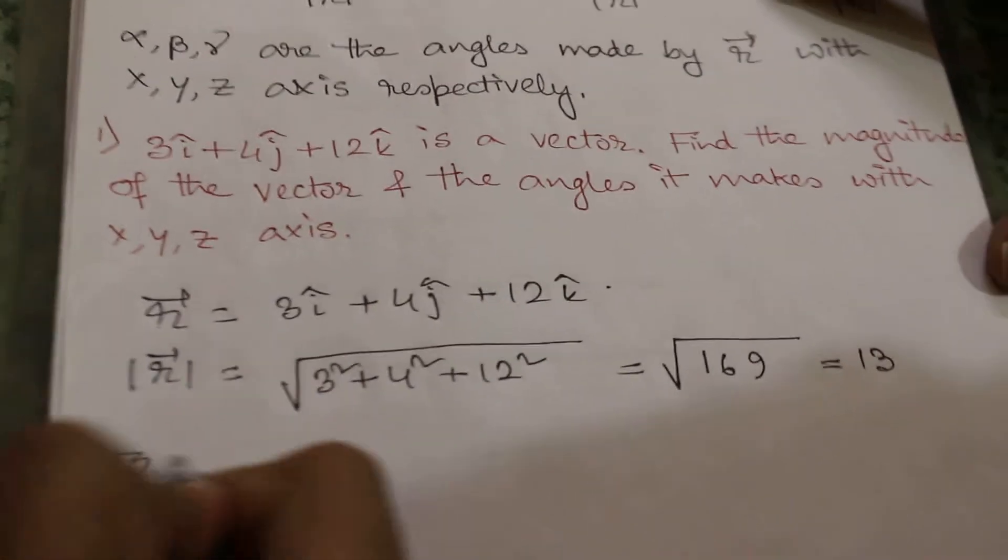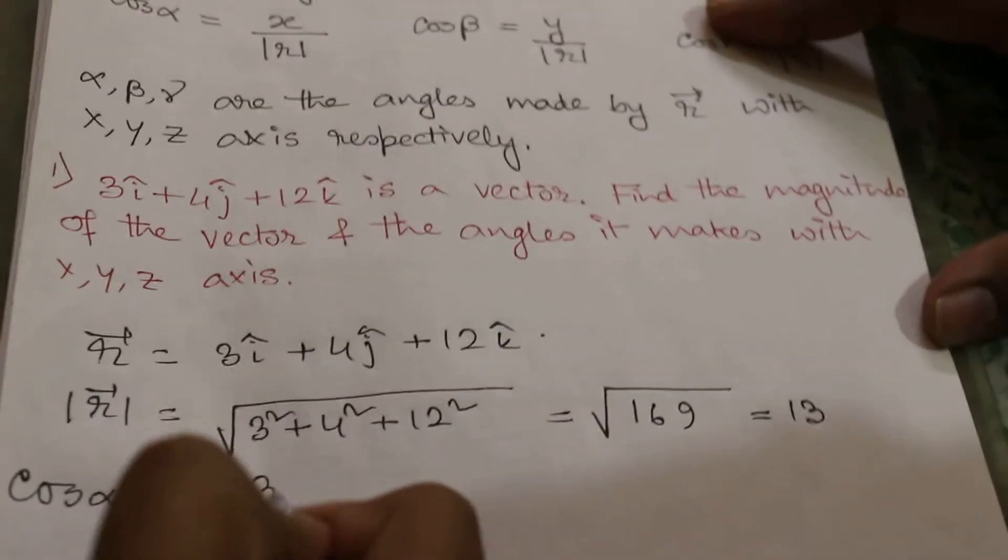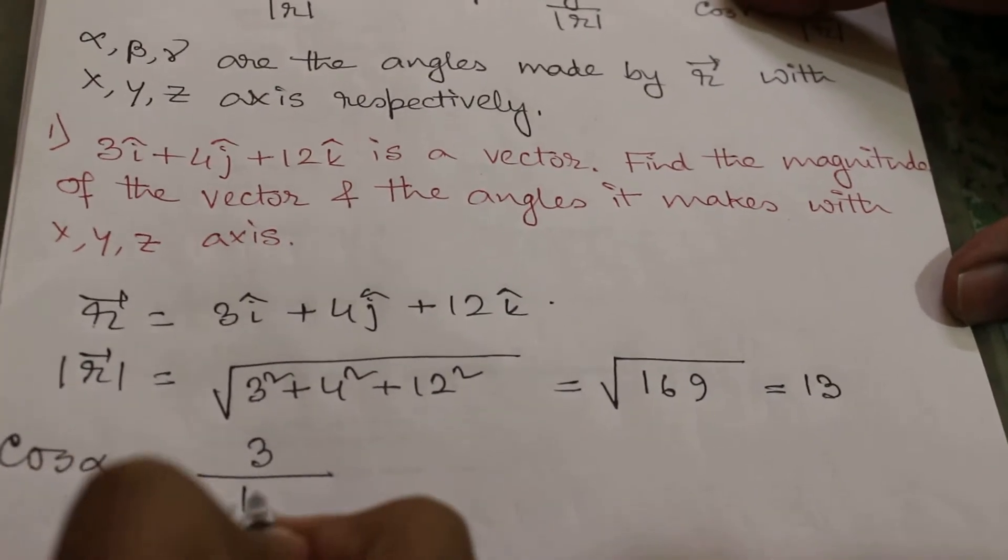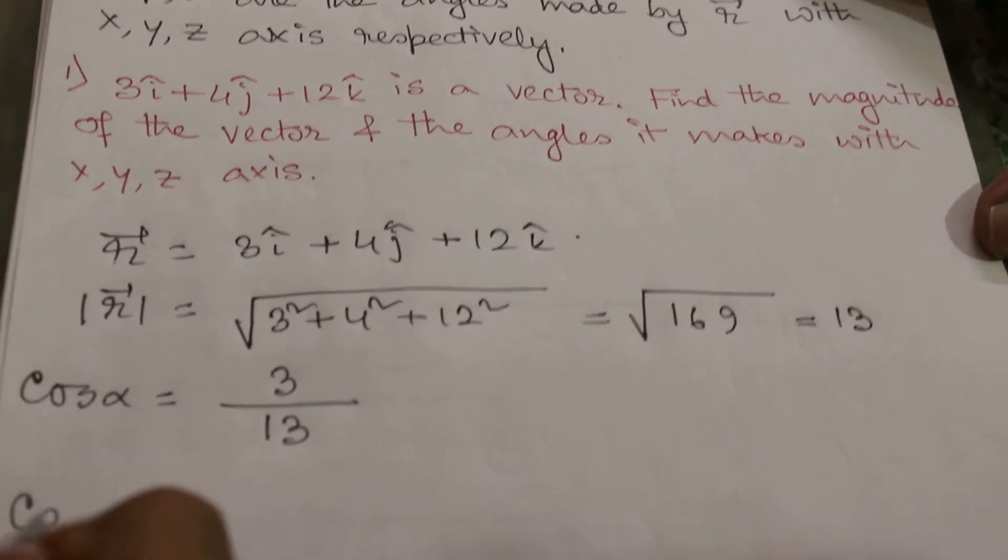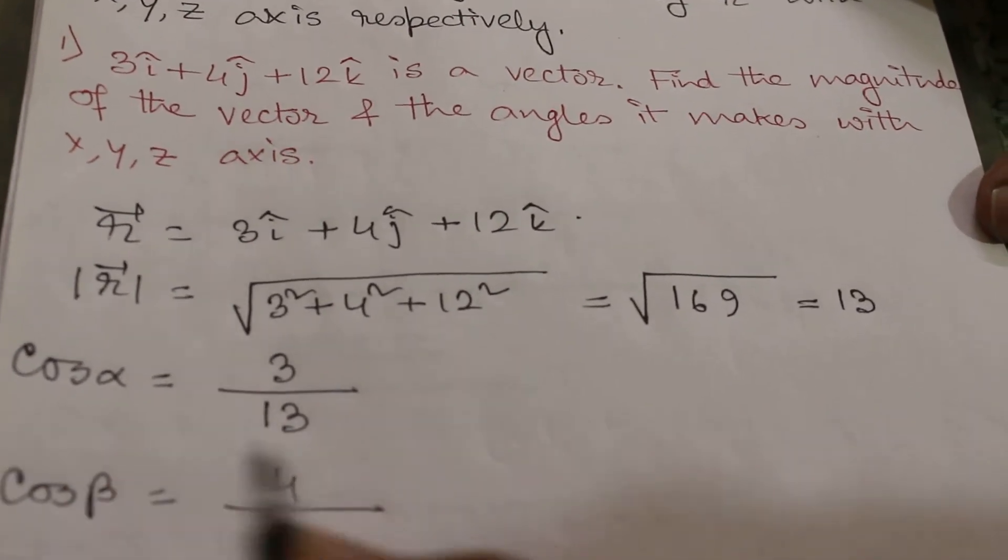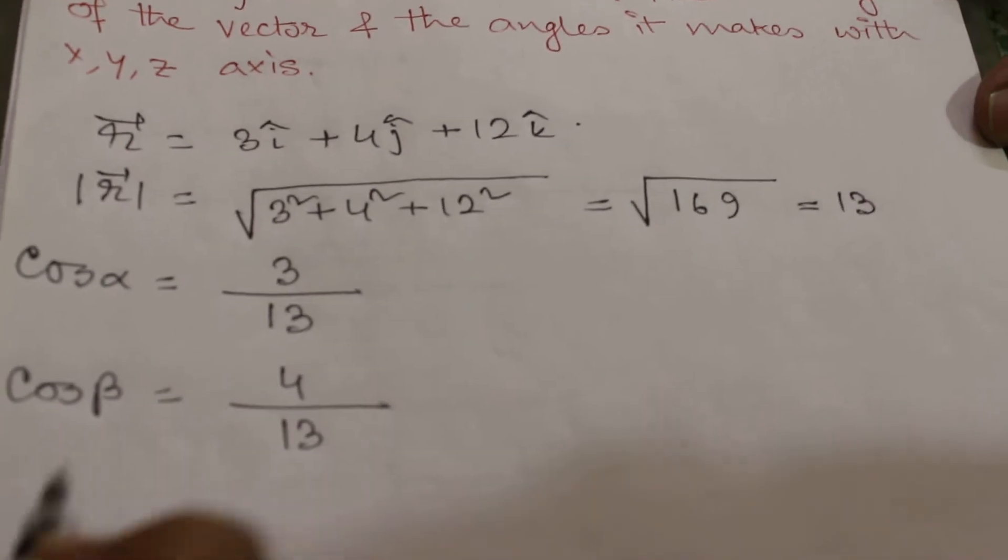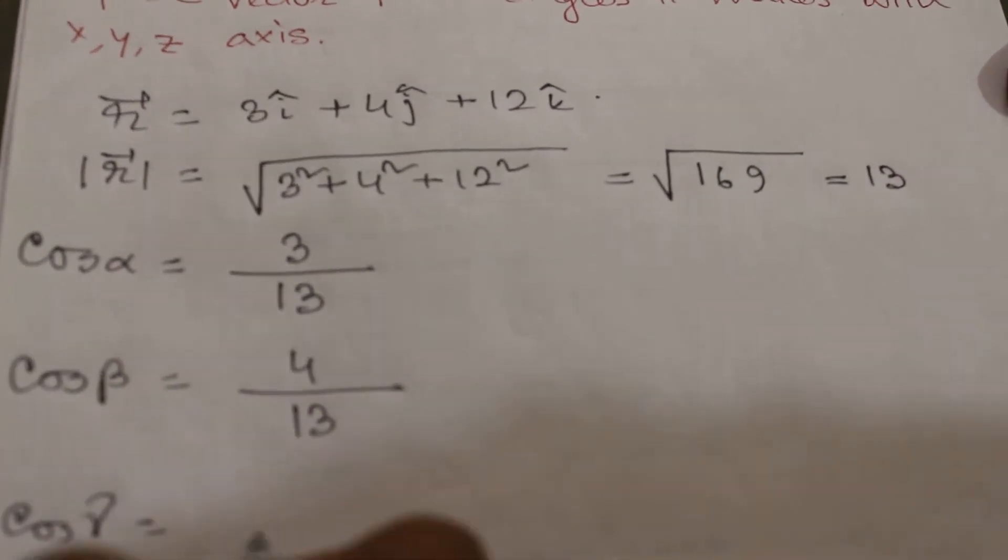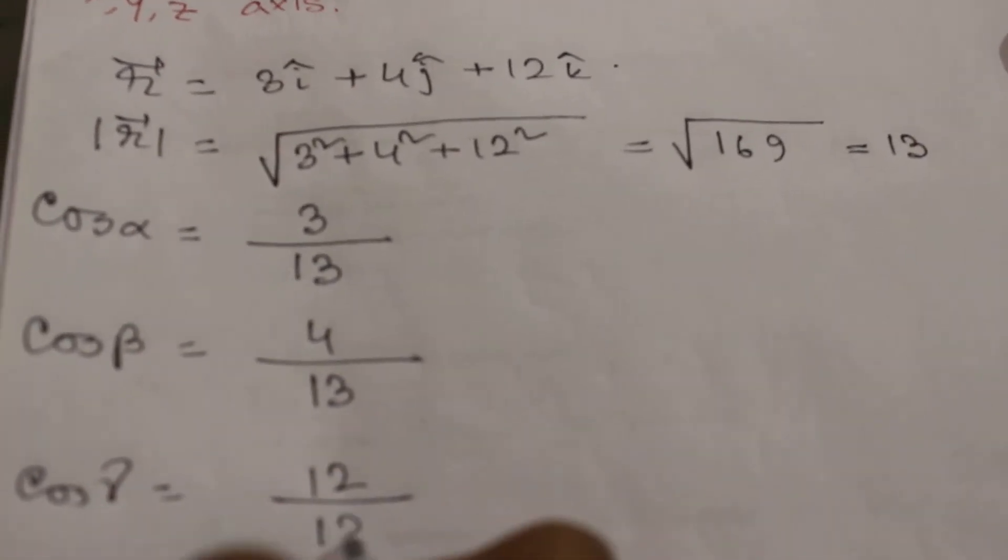Now we have to calculate cos alpha first. Cos alpha is equal to 3 by 13. Cos beta is equal to 4 by 13, and cos gamma is equal to 12 by 13.